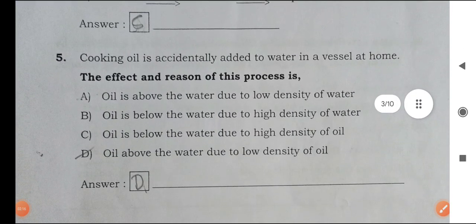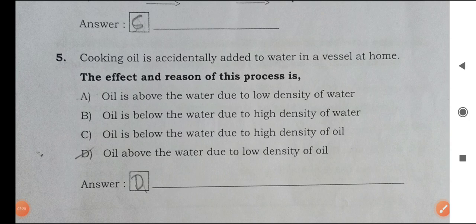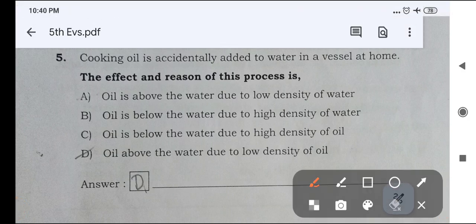Next one, cooking oil is accidentally added to water in a vessel at home. The effect and reason of this process is. Oil is above the water due to low density of water, wrong answer. Oil is below the water due to high density of water, wrong answer. Oil is below the water due to high density of oil, also wrong. Right answer is oil above the water due to low density of oil.